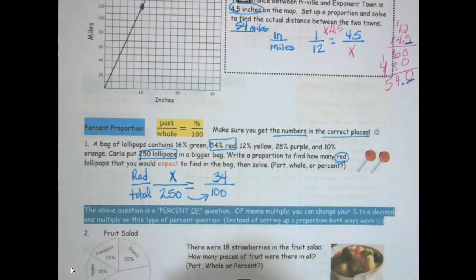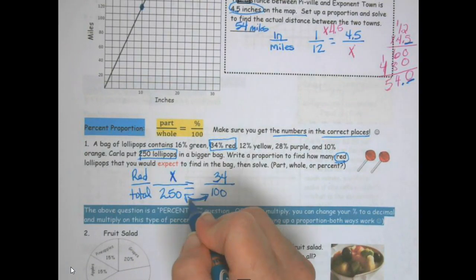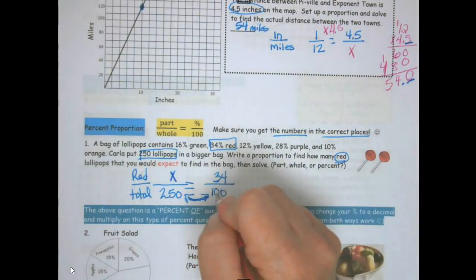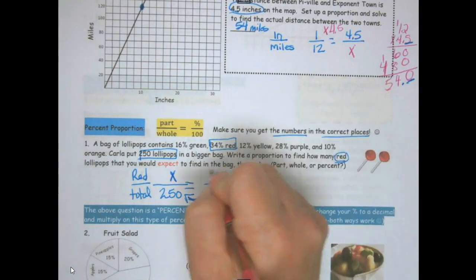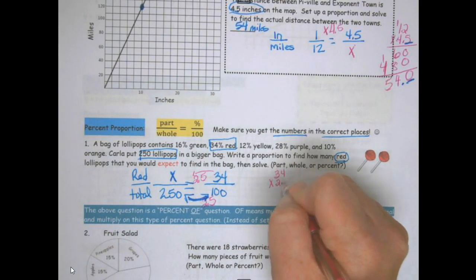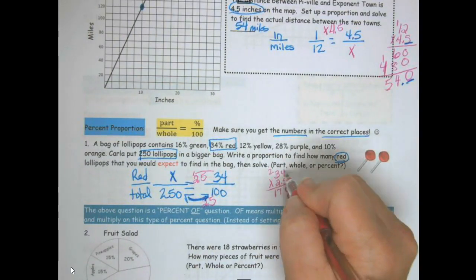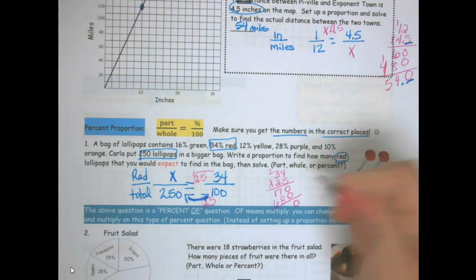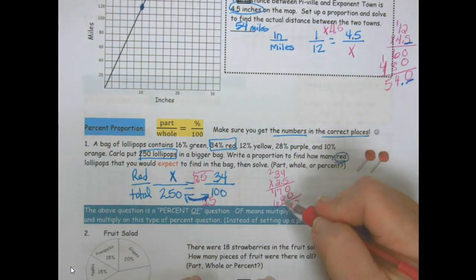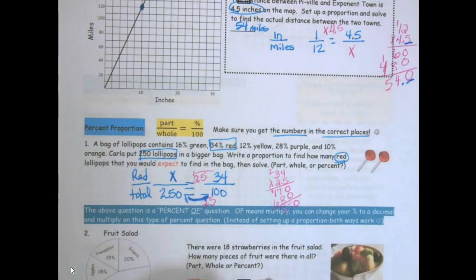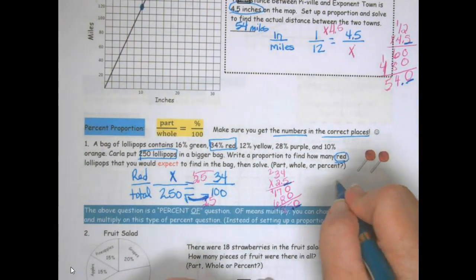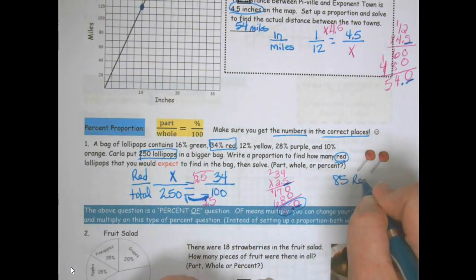How does 100 go to 250? 100 times 2.5. So 34 times 2.5. 5 times 4 is 20, carry my 2. 2 times 4 is 8. 2 times 3 is 6. So now I add. I have one number after my decimal so I have one number after my decimal. So there are 85 red lollipops.